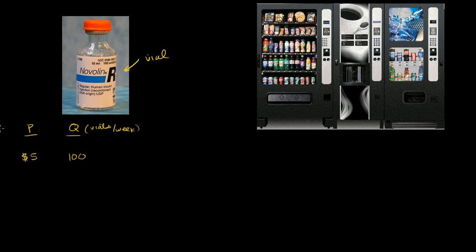Now what happens if the price changes? What happens if the price were to go down to $1? Well, they're not going to buy any more insulin. They're going to buy just what they need in order to maintain their diabetes. And remember, we're holding all else equal. We're not assuming any change in expectations of price. So in this case, they'll still just buy 100 vials.